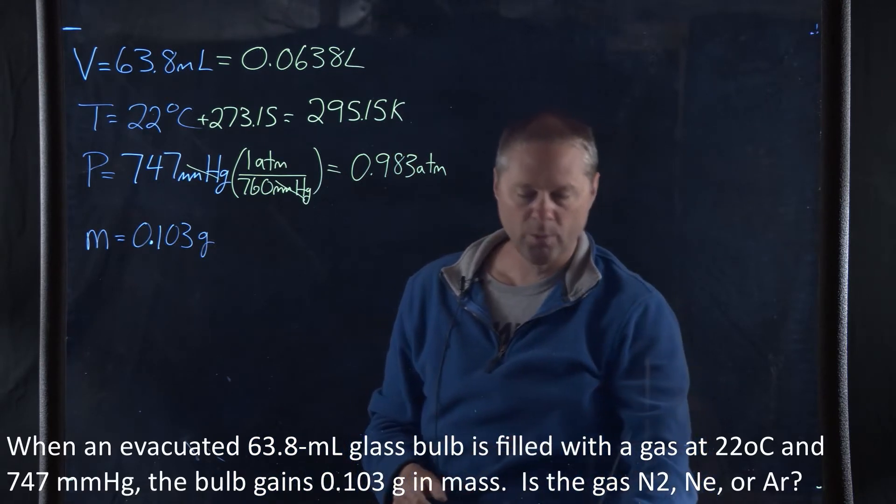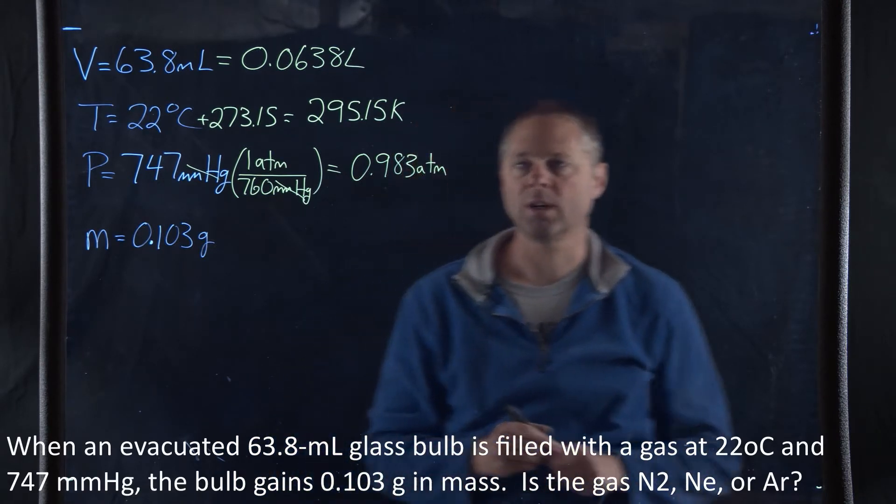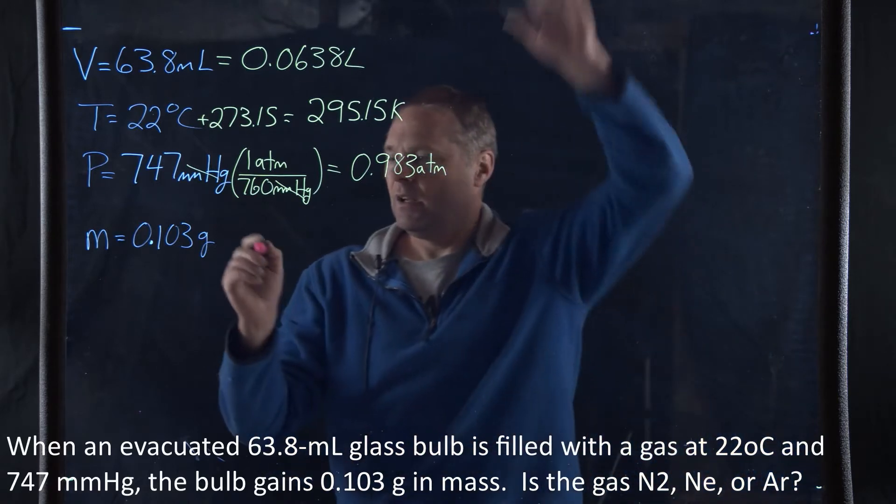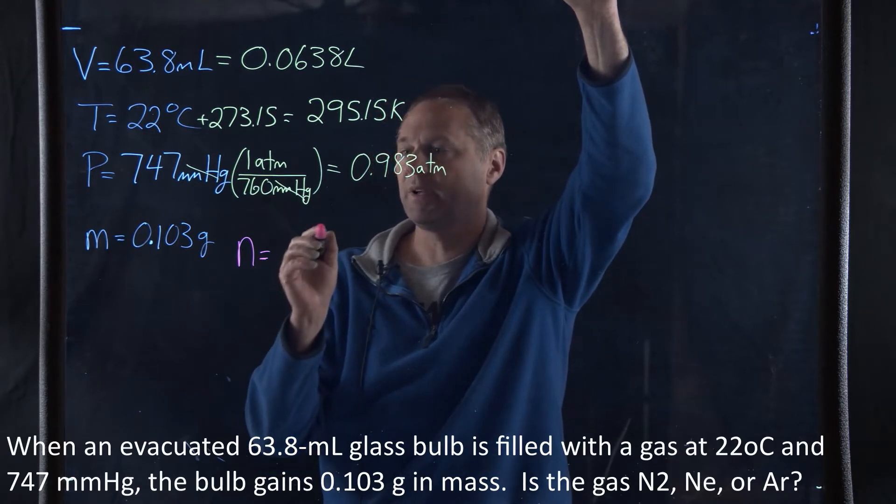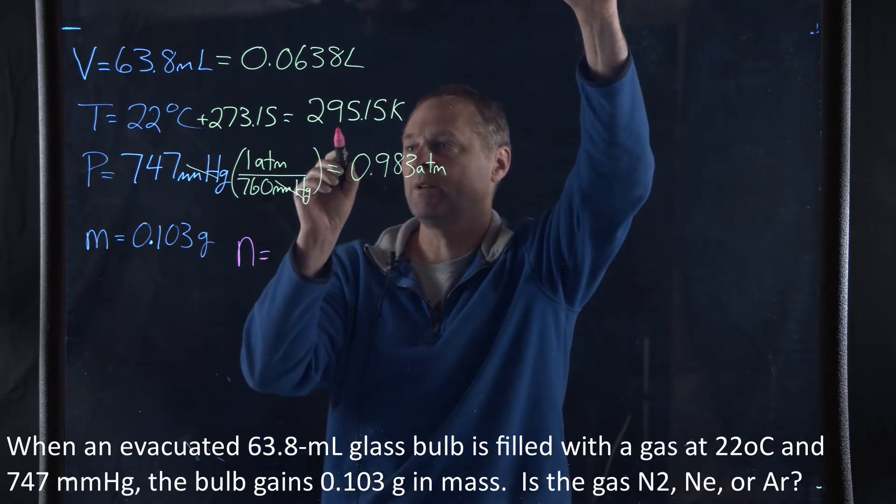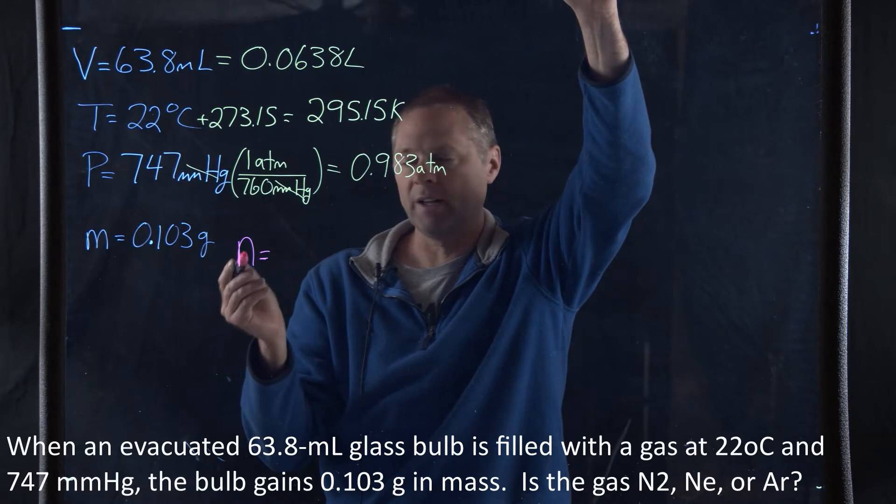Now, what we want to do is we want to find the number of moles of the substance. n is going to be the number of moles, because we're given a pressure, a temperature, and a volume, so we can find the number of moles.